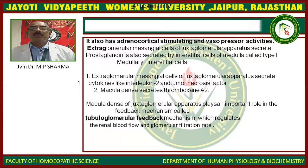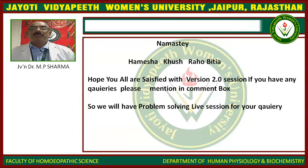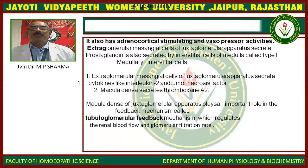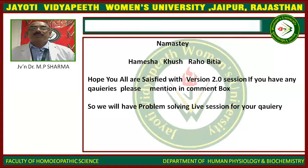Extraglomerular mesangial cells of the juxtaglomerular apparatus also secrete prostaglandins, which are also secreted by the type 1 medullary interstitial cells. These cells secrete cytokines including interleukin-2 and tumor necrosis factor. Macula densa secretes thromboxane A2. The medullary interstitial cells of the juxtaglomerular apparatus play an important role in the tubuloglomerular feedback mechanism, which regulates renal blood flow and glomerular filtration rate.